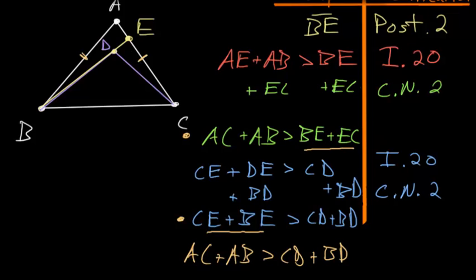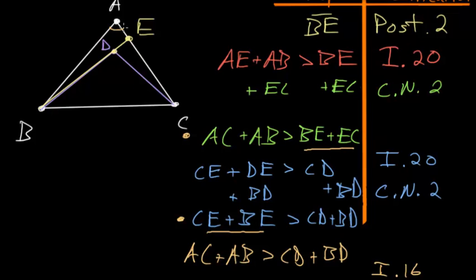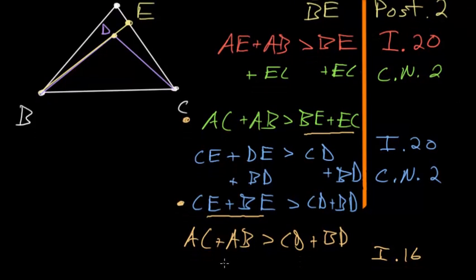Now that is just part of the proof. The next part is showing that this angle is bigger than this angle. To do that we need to use Book 1 Proposition 16, which says that the exterior angle of a triangle is bigger than either of the opposite interior angles. So let's look at angle BEC and show that it's bigger than angle BAC — this exterior angle is bigger than this interior opposite angle. We can write that down: angle BEC is bigger than angle BAC.